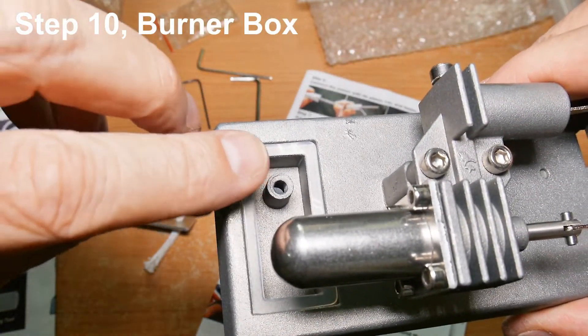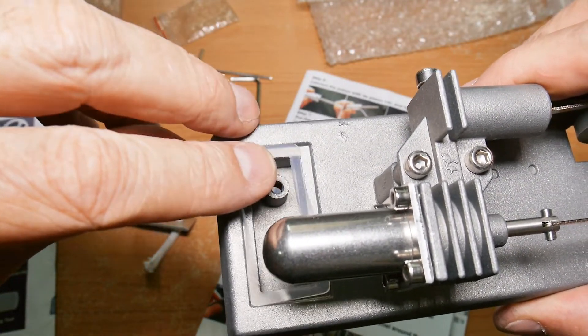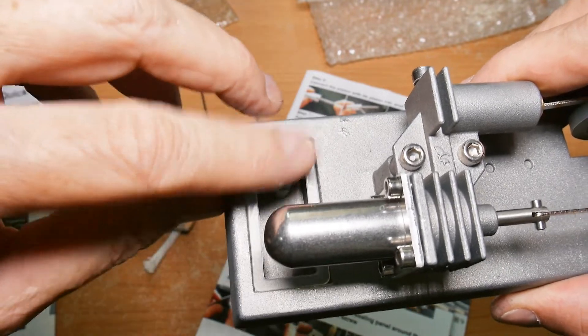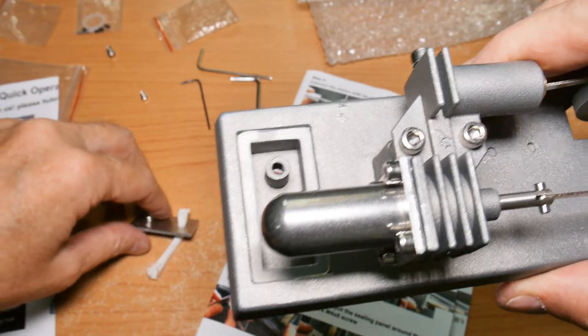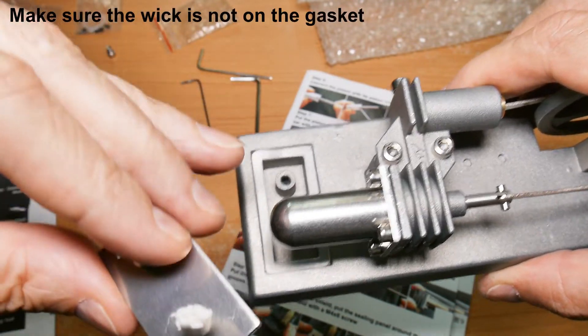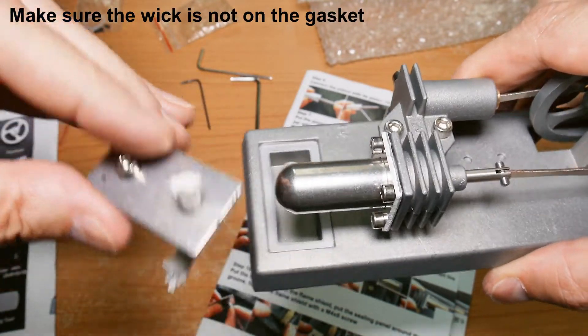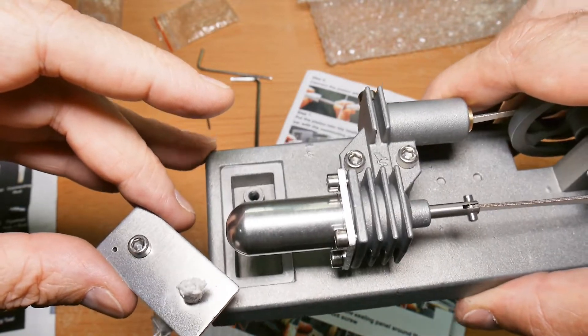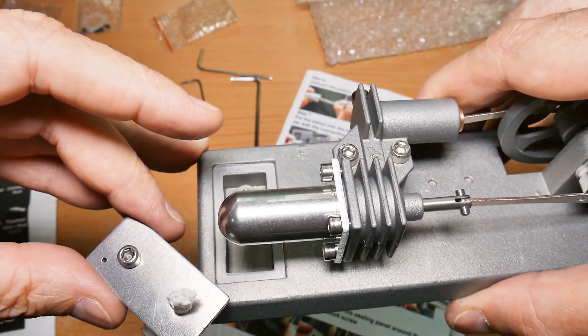I have the gasket here in place. There, you can see it when I move it. And next I need to put the wick on the cover here. And then screw it down. So I'll be right back.